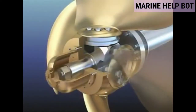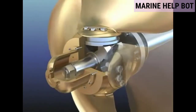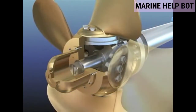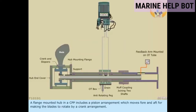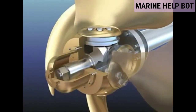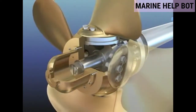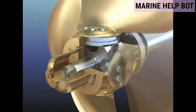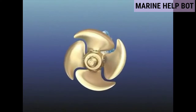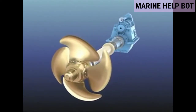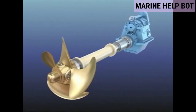Now with the help of a video I will explain the working of CPP. A flange-mounted hub in a CPP includes a piston arrangement which moves fore and aft to move the blades, making the blades rotate by a crank arrangement. As you can see in this video, with the help of the piston arrangement the blade's pitch can be altered as per the requirement.